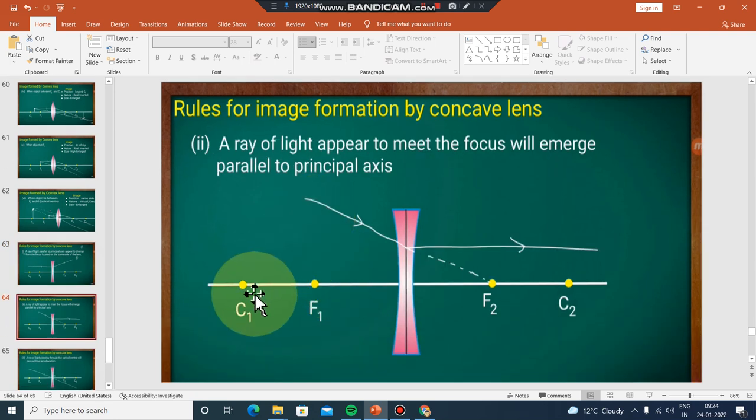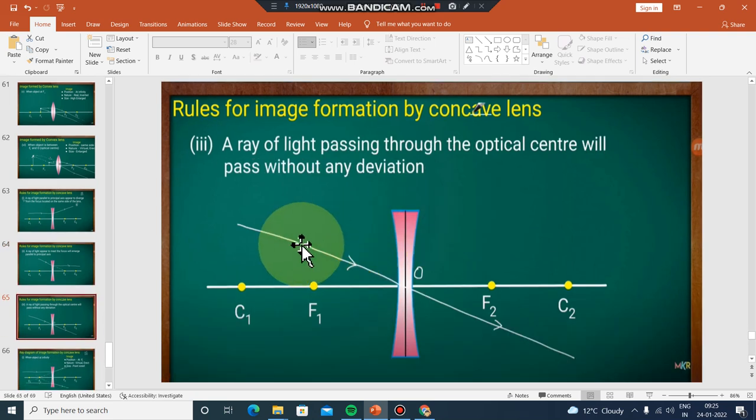A ray of light parallel to the principal axis will appear to diverge from the focal point. The ray parallel to the main axis passes through the optical center.